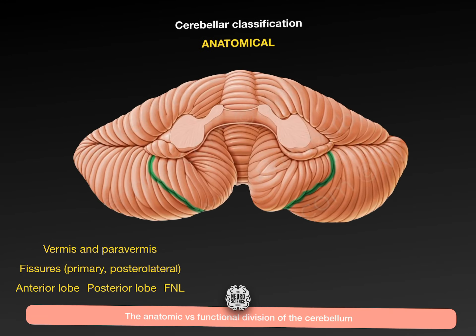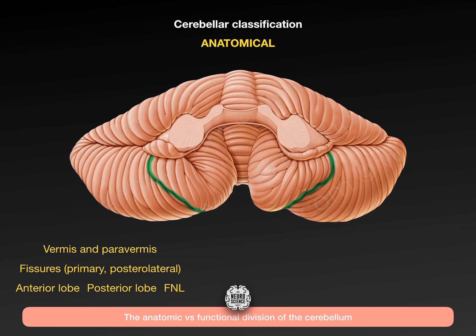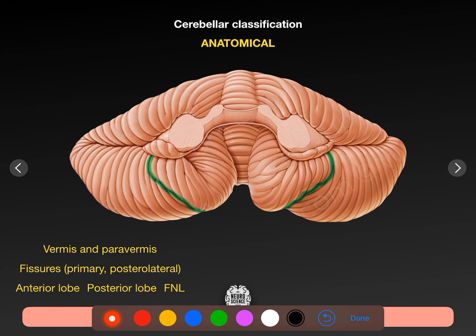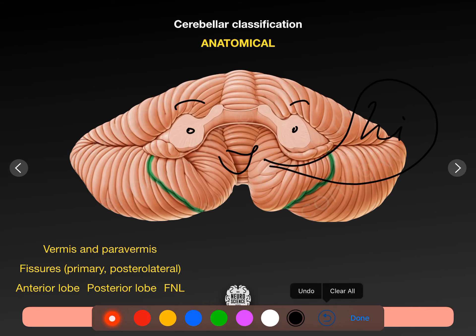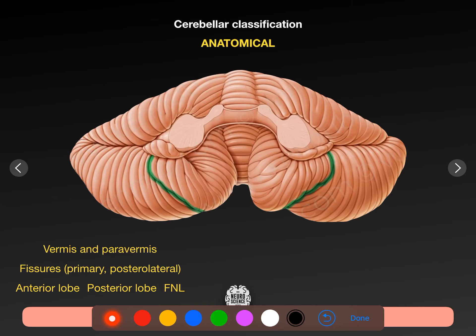Let's flip the cerebellum over and look at an anterior perspective. The first thing that hits you are these weird cerebellar peduncles. This is how the cerebellum talks to the pons, the medulla, and the midbrain - and how the midbrain, pons, medulla, spinal cord, and cerebrum all talk to the cerebellum. The cerebellum hangs off the brainstem by these structures, but we don't care about that today.